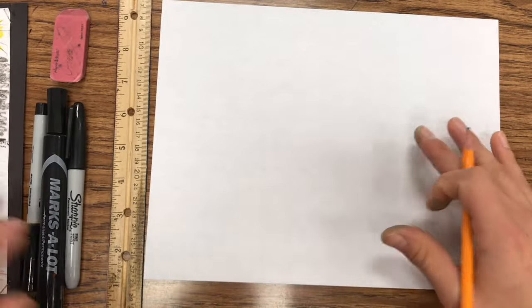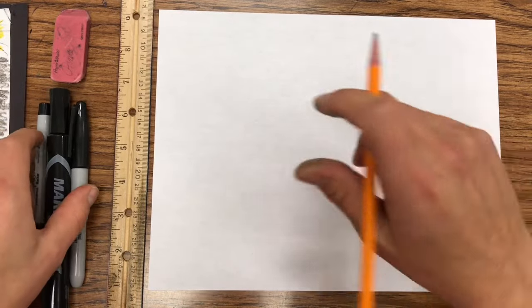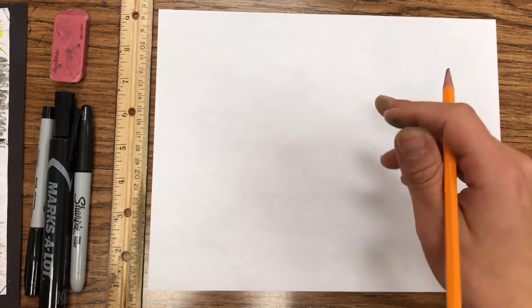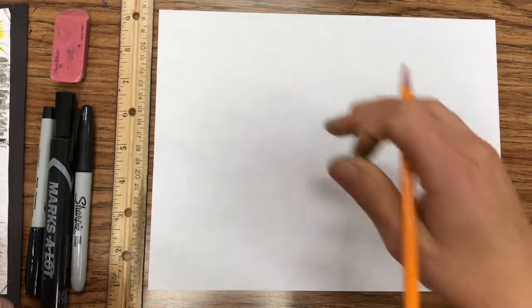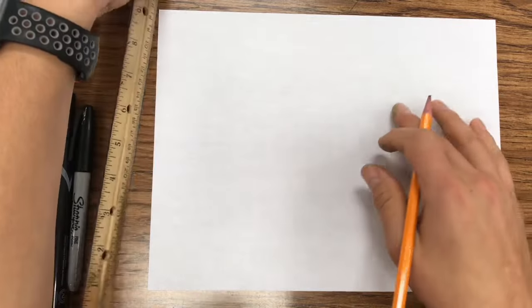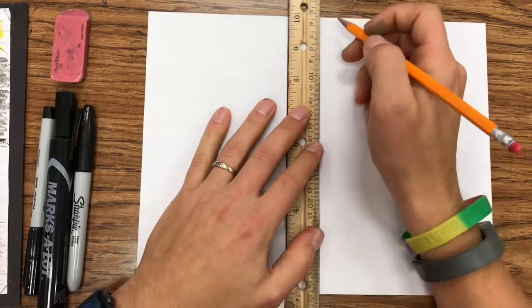Really basic supplies for this: just a ruler, paper, some Sharpies if you want to outline some of the stuff, and then I always put out my big bins of colored pencils or crayons. It's just kind of a free fun day where kids can reflect on what they're most thankful for.